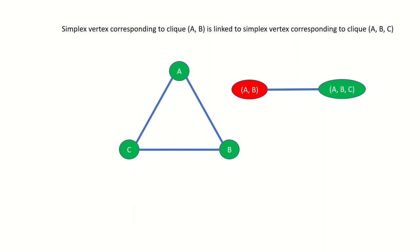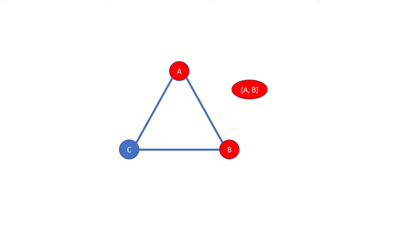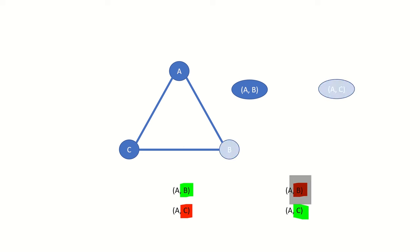However, simplex graph vertices corresponding to cliques like A, B and A, C will not be connected because A, B includes vertex B and lacks vertex C, while clique A, C includes vertex C and lacks vertex B. They actually differ in the presence and absence of two different vertices, not one. This implies that simplex graph vertices corresponding to cliques of the same size are not connected, as different cliques of the same size must differ by at least two vertices.